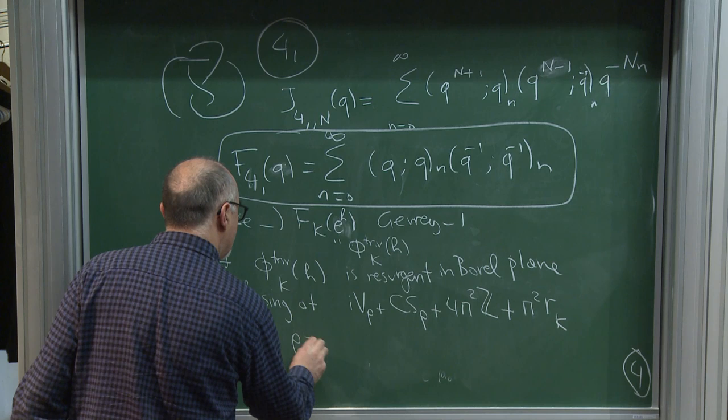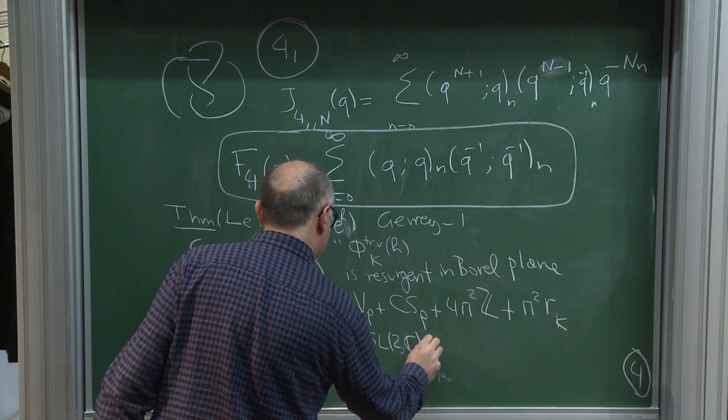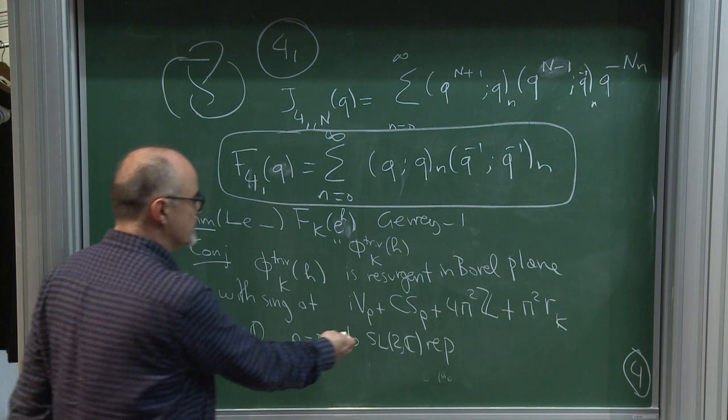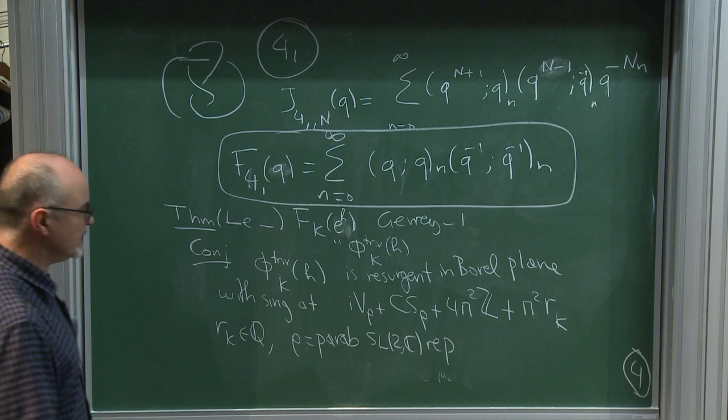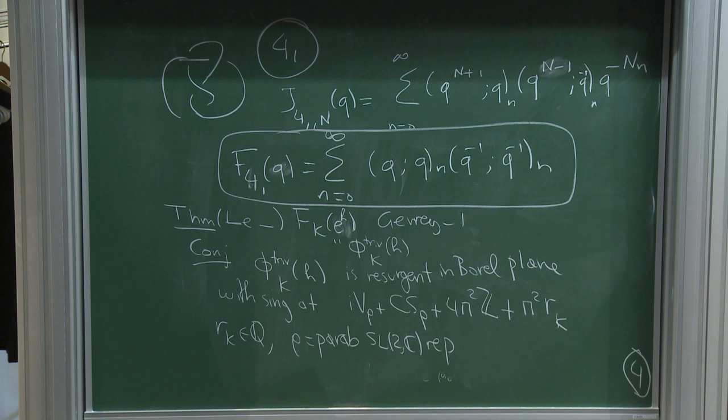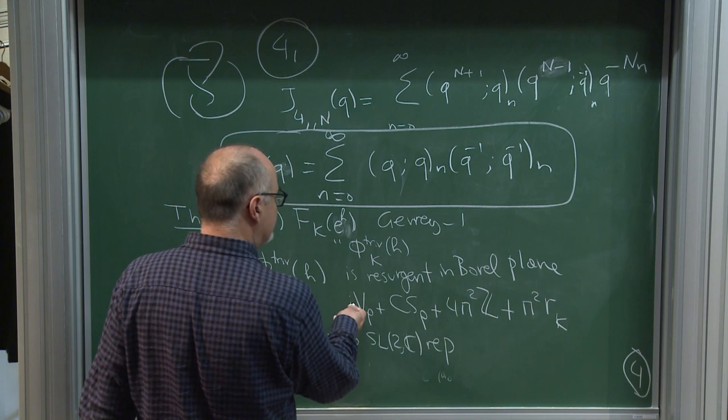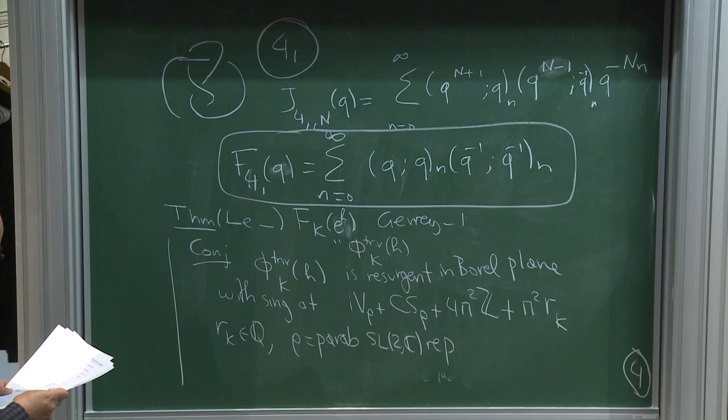A parabolic representation is a homomorphism of the fundamental group into SL₂ℂ where the trace of the meridian and longitude is ±1. Among all parabolic representations there is the trivial one, with zero volume and zero Chern-Simons. The shift r_K is a rational number that does not depend on the representation — it is an overall shift.